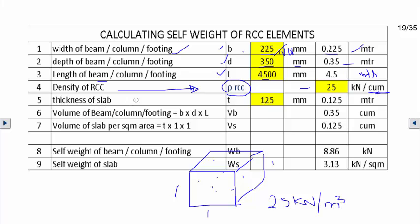Thickness of slab is given. This is same as beam, column, and footing because all have width, depth, and length. Slab thickness is given as 125 mm converted into meters, divided by 1000, gives 0.125 meters.